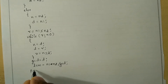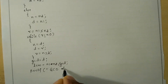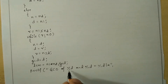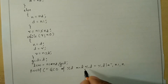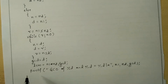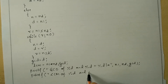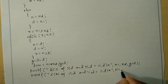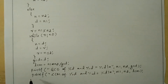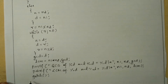Let us print LCM and GCD. We write: printf("GCD of %d and %d = %d\n", n1, n2, gcd). Then for LCM: printf("LCM of %d and %d = %d\n", n1, n2, lcm). Finally, we write getch() and the closing curly brace.